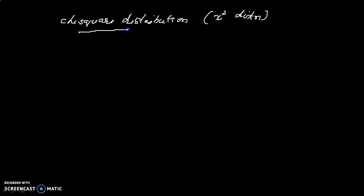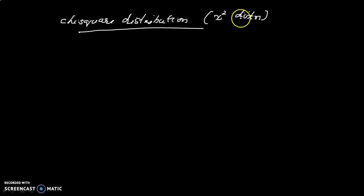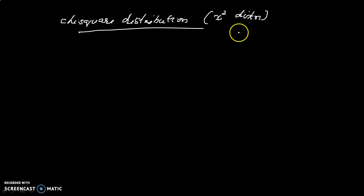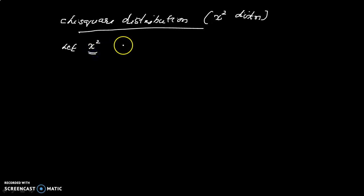Now, what is a chi-square distribution? We can define the chi-square distribution by letting x be a continuous random variable. The random variable follows chi-square, which means the random variable is squared.